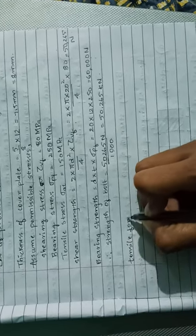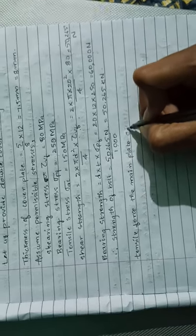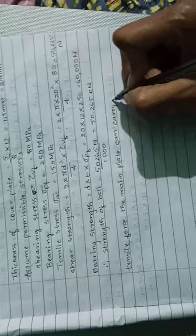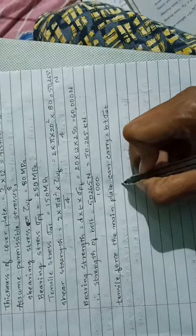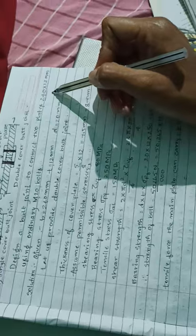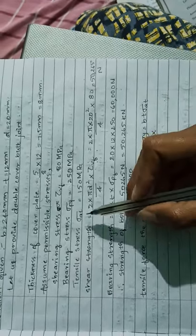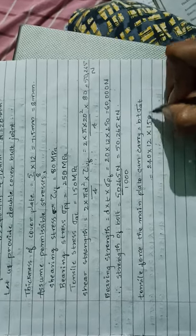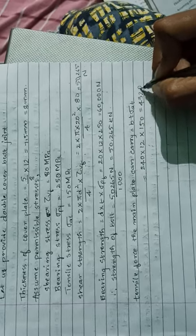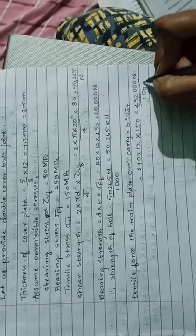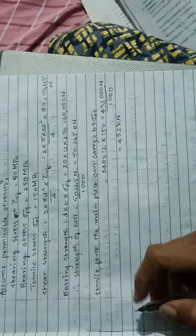Tensile force the main plate can carry will be equal to B into T into sigma_t. B is breadth, that is 240; thickness is 12; sigma_t we have assumed as 150 MPa, and that will be equal to 432,000 Newton, or when you divide by 1000, 432 kN.